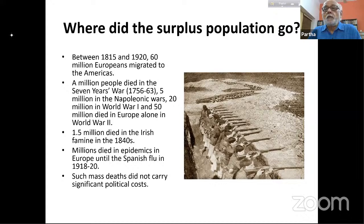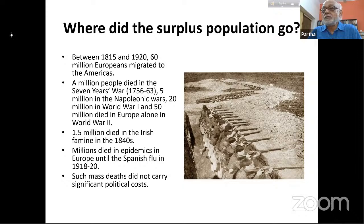There were still famines in various parts of Europe — the Irish famine of the 1840s is a particularly well-known example where one and a half million people died. Epidemics killed millions in Europe all the way to the Spanish flu in 1918-20. Mass inoculation, vaccination, and modern medicines like penicillin and antibiotics all came in the middle of the 20th century — until then, millions had died in European epidemics.